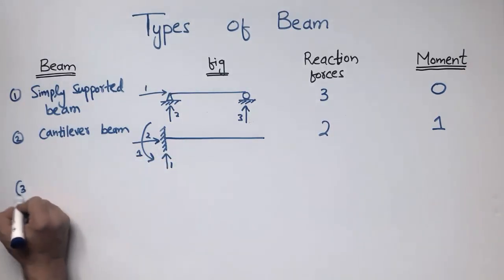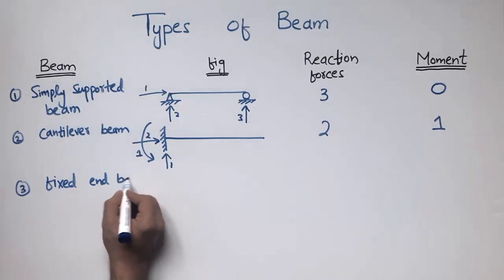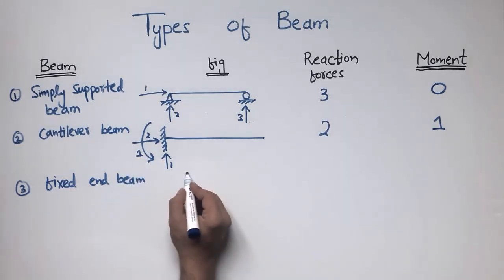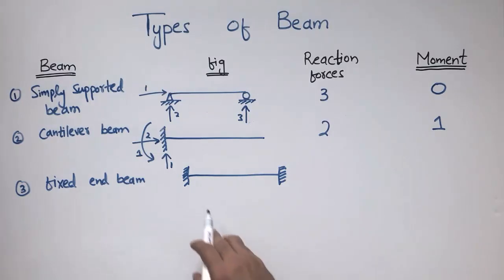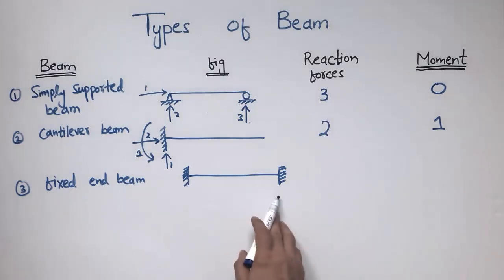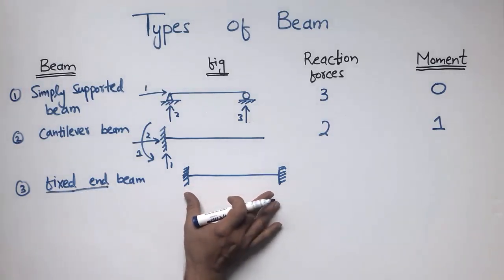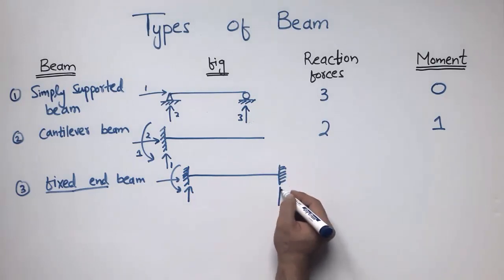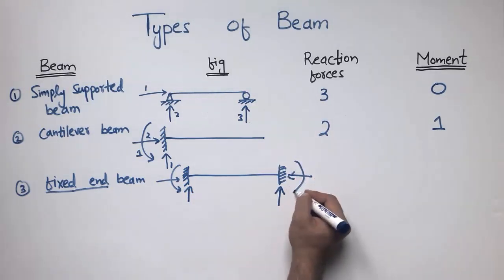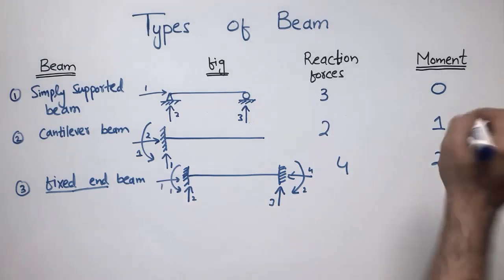The third type is the fixed end beam, where both supports are fixed at both ends. It is a modified form of the cantilever beam in which only one end is fixed, but here both ends are fixed. Each fixed support can resist vertical, horizontal, and moment. So we have four support reaction forces and two moment capacities — it can resist moment at both ends.